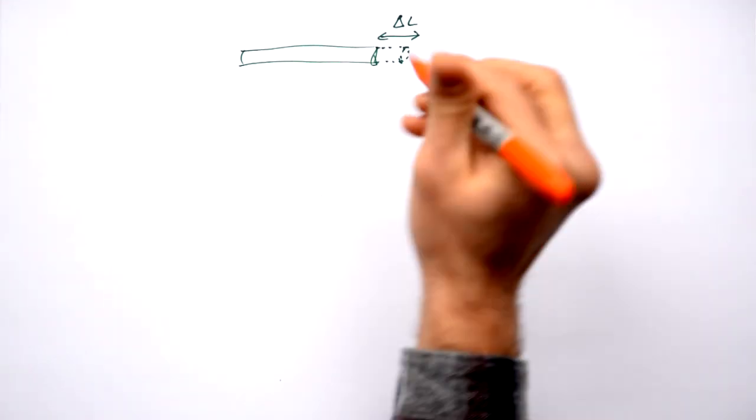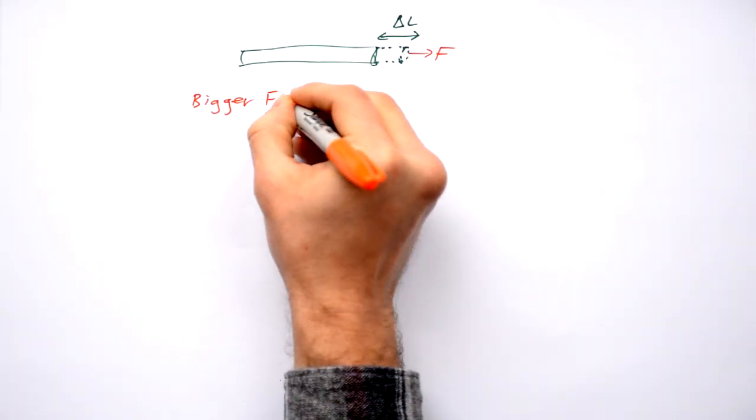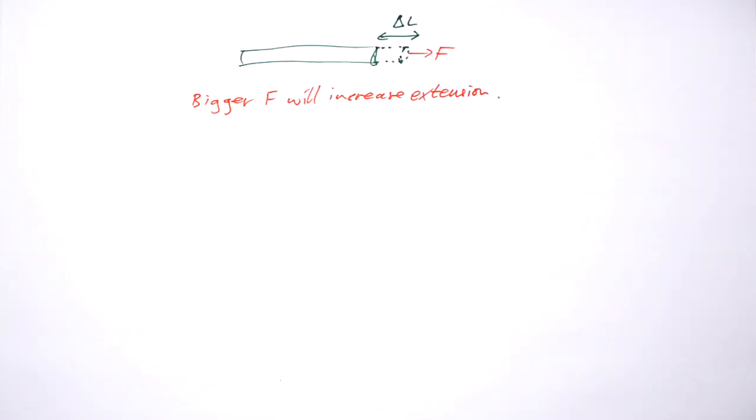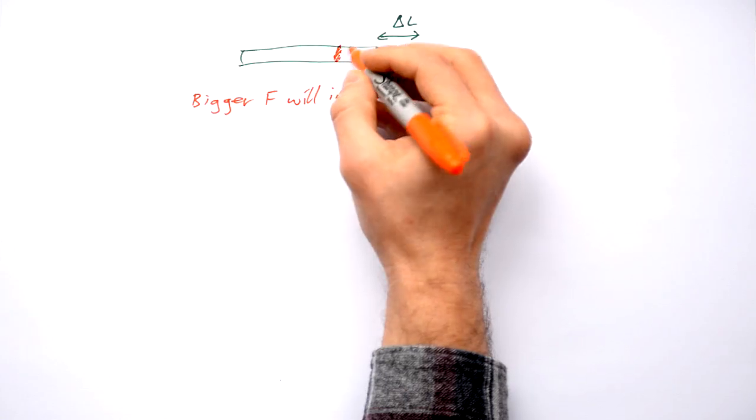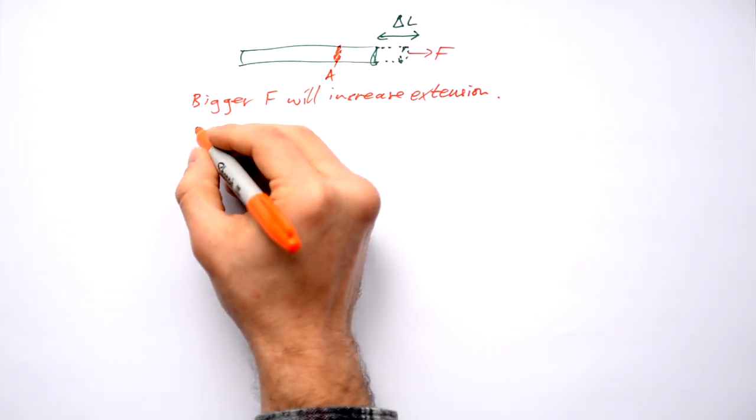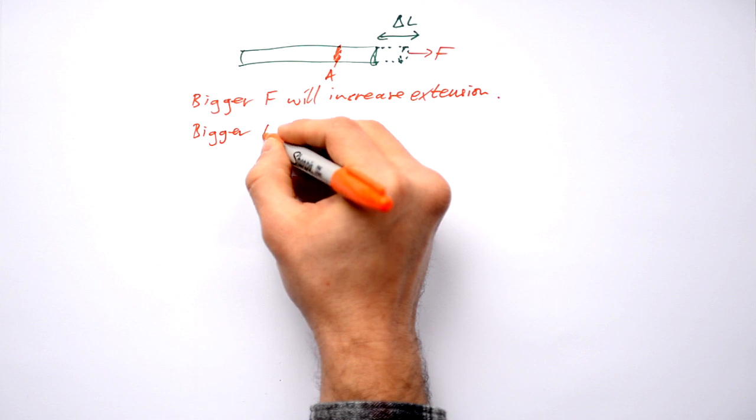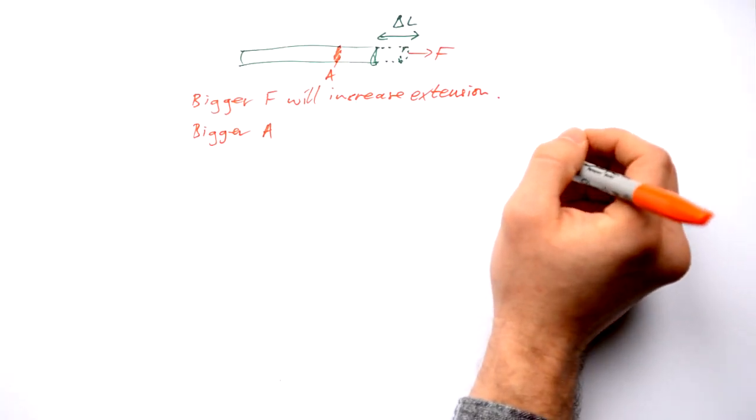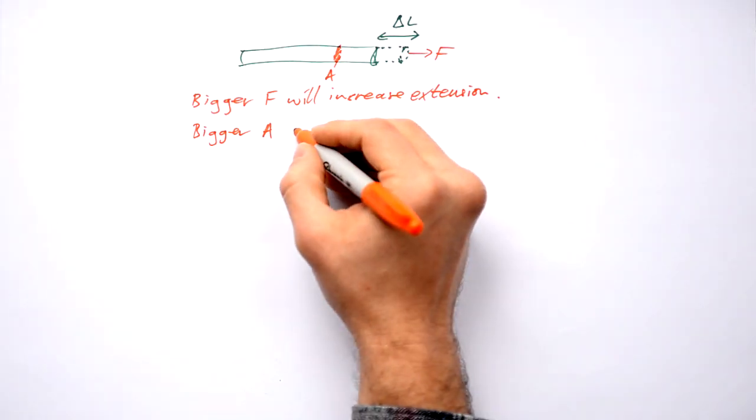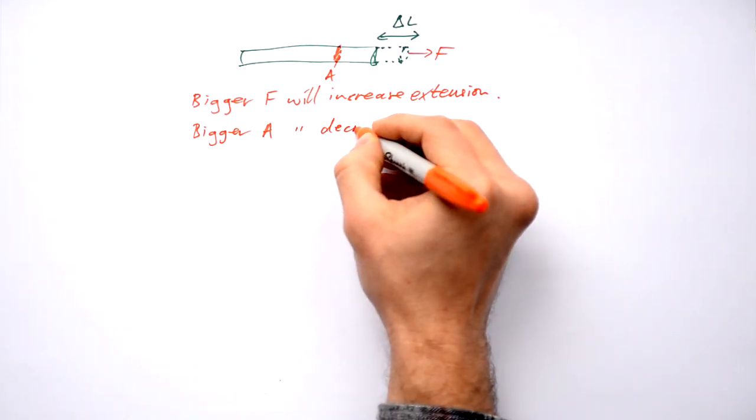In order to stretch something, first of all we need a force. A bigger force will increase it. What else do we have? We have cross-sectional area. If you've got a bigger area, then it actually makes it harder to stretch something because it's thicker. So it's the opposite.